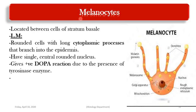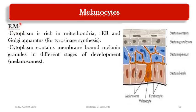Melanocytes are present in the stratum basale, resting on the basement membrane. By light microscopy they appear with a rounded cell body and cytoplasmic processes that branch between the keratinocytes. They have a central vesicular rounded nucleus. Their cytoplasm contains tyrosinase enzyme, which is responsible for the formation of melanin pigment — confirmed by the positive DOPA reaction, which proves the presence of tyrosinase enzyme.